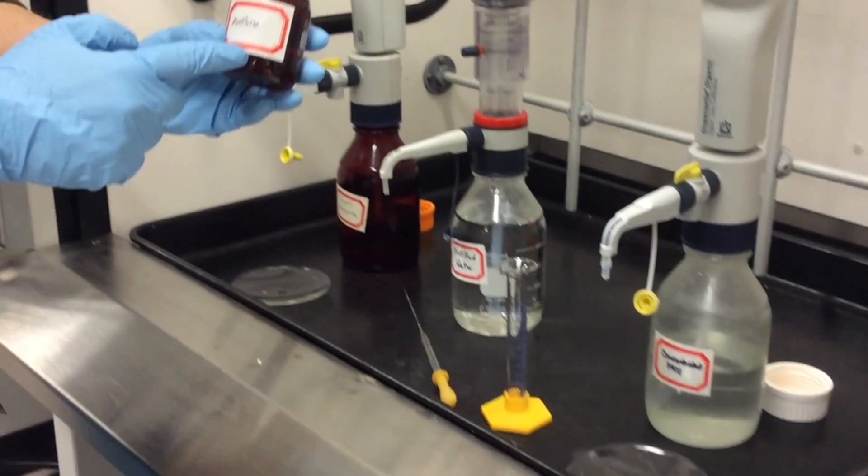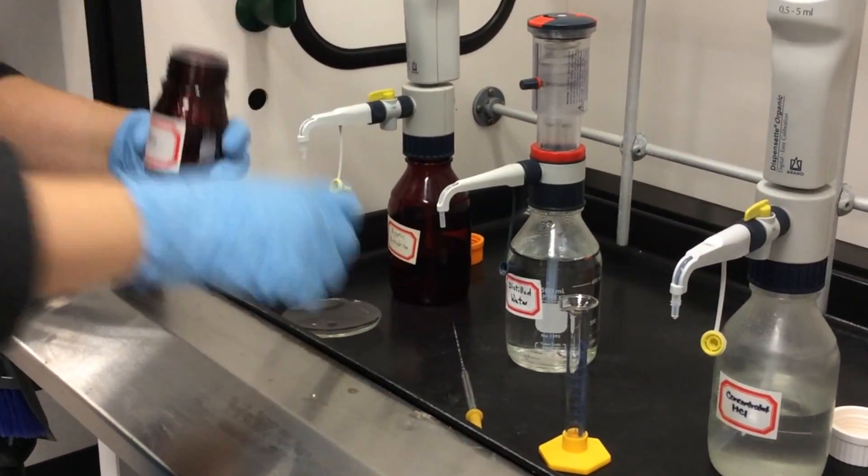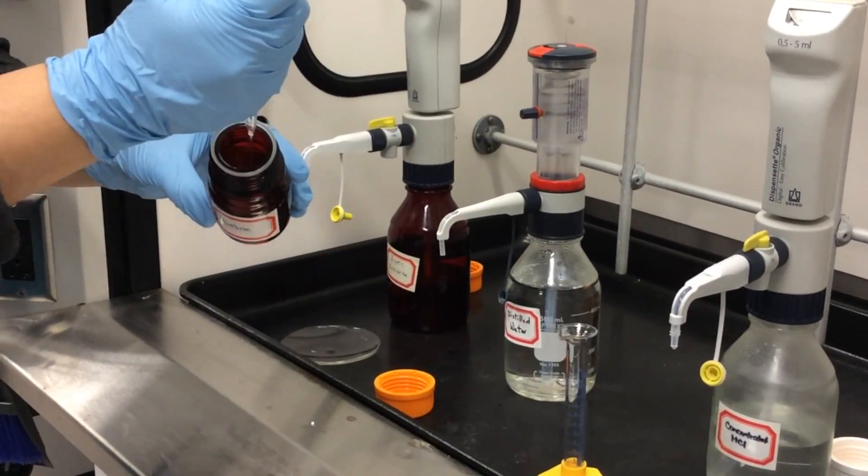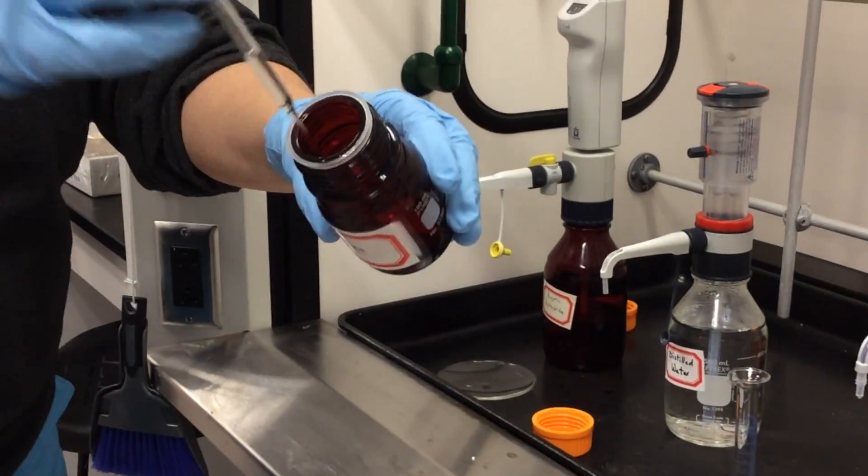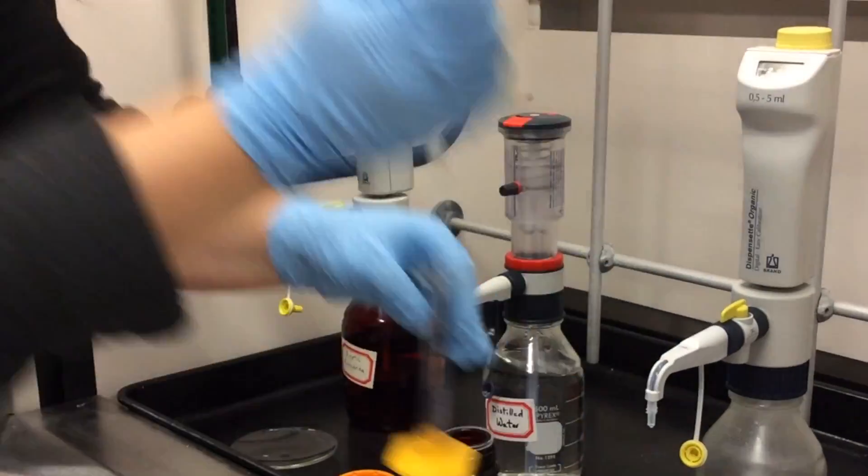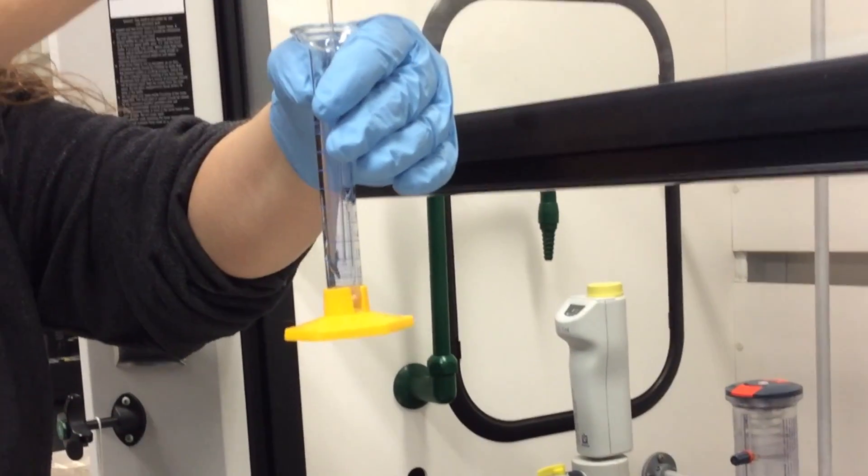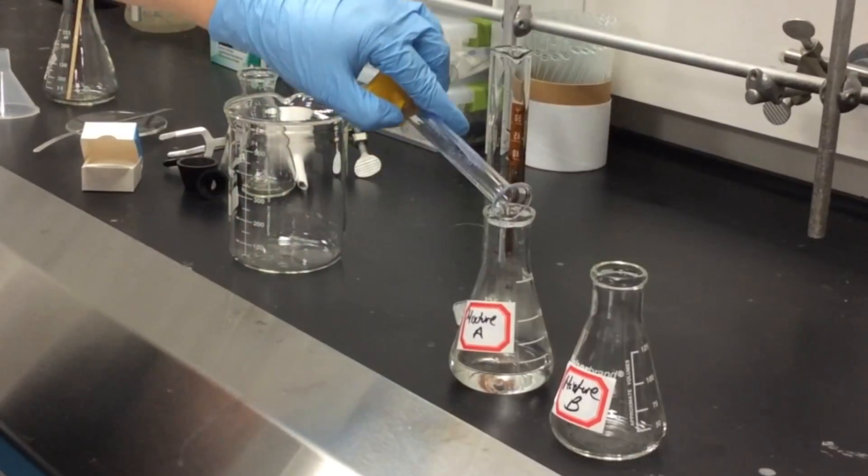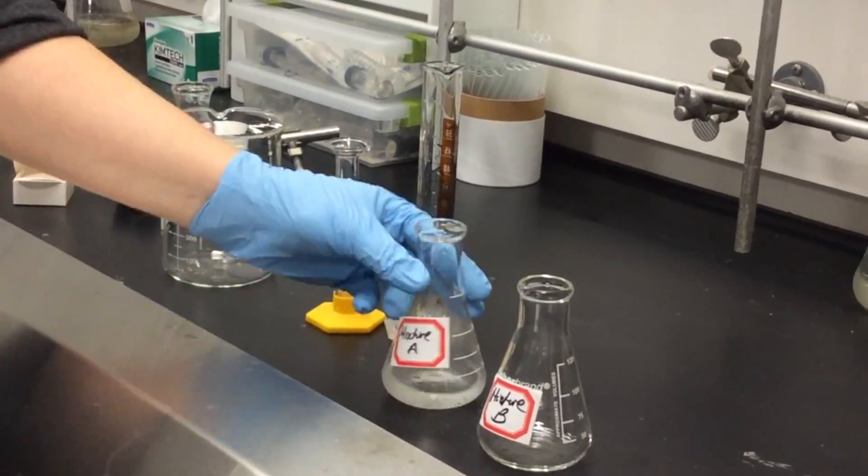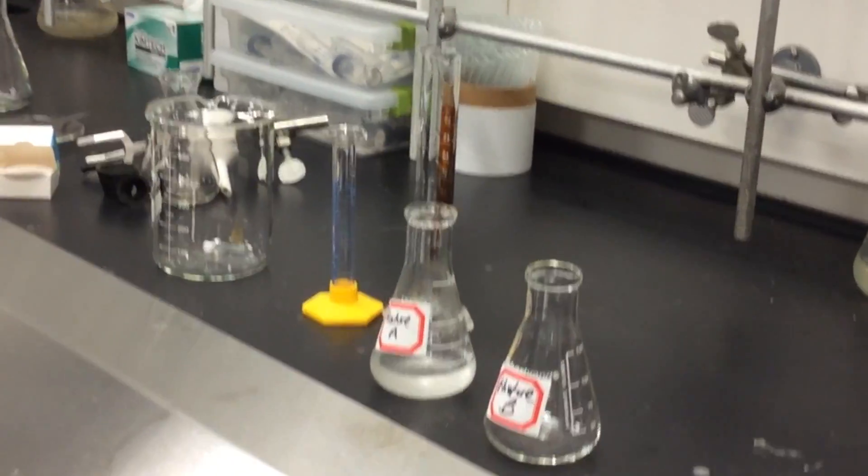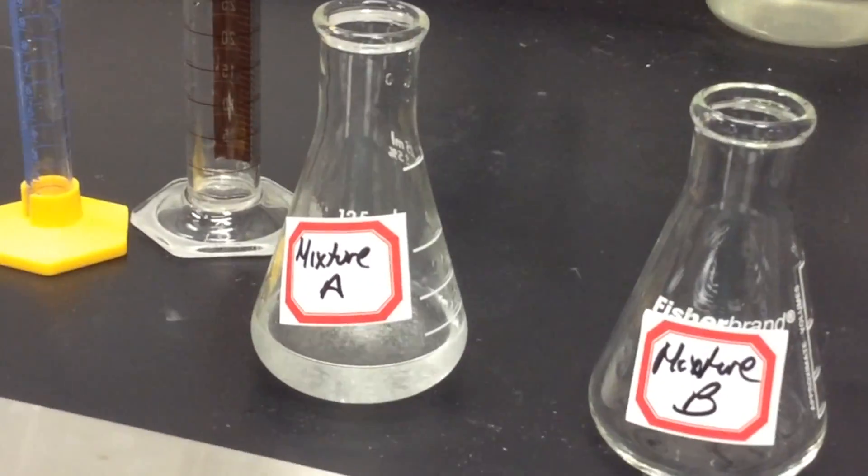Next, we're going to go back to our dispensing hood, open up the aniline, pipette out two milliliters of aniline, put it in our graduated cylinder, and then take that aniline back to our hood and pour it into mixture A. Now swirl mixture A, put it on the hood, and let it sit.